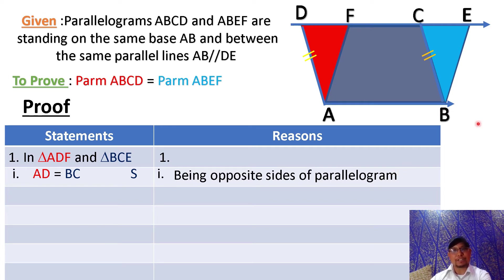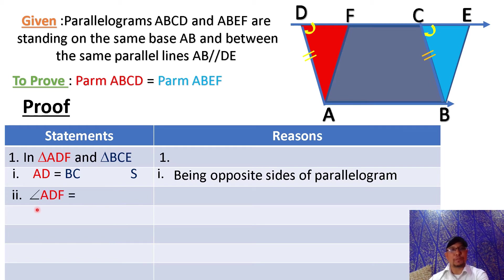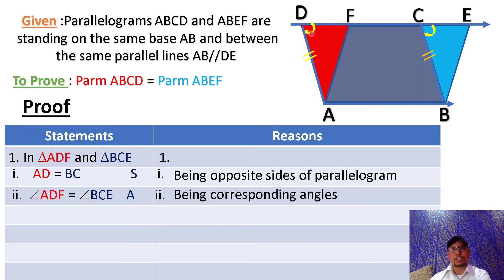Now next, look at the picture. You see angle ADF equals angle BCE. So in statement two, you can write angle ADF equals angle BCE. What is the reason, students? The reason is: these two angles are corresponding angles. So the reason is being corresponding angles.